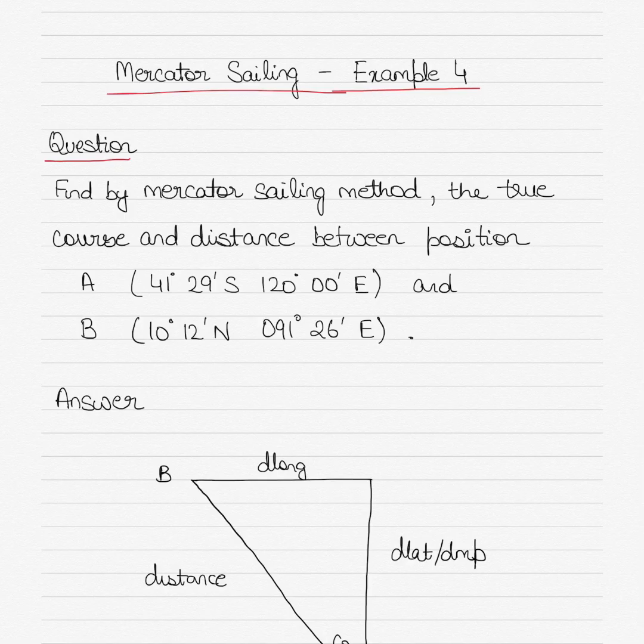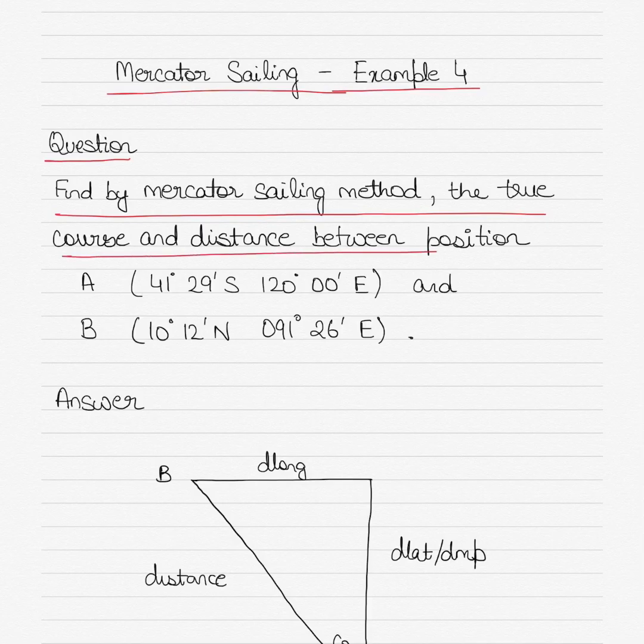So let's get started by solving this question. This question says that we have to find by Mercator Sailing method the true course and distance between the two positions. So we have been given position A and position B, and we have to find the course and distance between the positions.